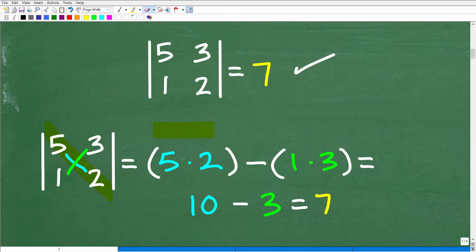So five times two will be our first product. Then we're going to subtract that from the product of the diagonals going this way - one times three. When we do that, we have five times two is 10, minus one times three which is three. So 10 minus three is seven, and that is it.